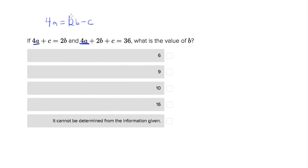And so I'm going to take that entire thing that we found was 4a, and I'm going to plug it into the second equation. So where we have 4a, we can put 2b minus c, that's our whole term for 4a, plus 2b plus c equals 36.